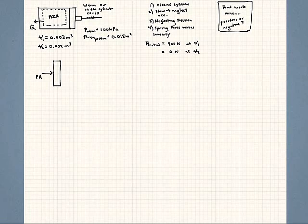Some assumptions we're making: we're saying that the system is a closed system, we're assuming that this piston is moving very slowly during this process so we're going to neglect acceleration, we're also neglecting any frictional forces, and we're assuming that the spring force varies linearly. What I'd like to start doing here first is let me go ahead and draw a free body diagram of the piston here, so we can get a better idea of the pressures acting on this system.